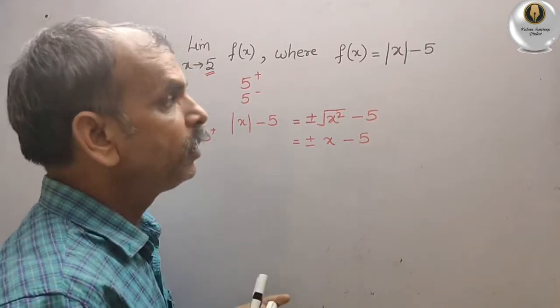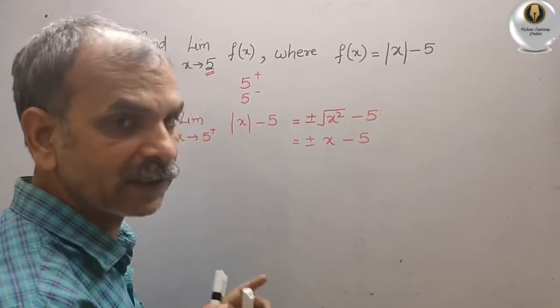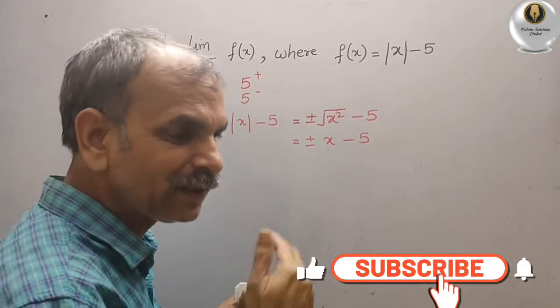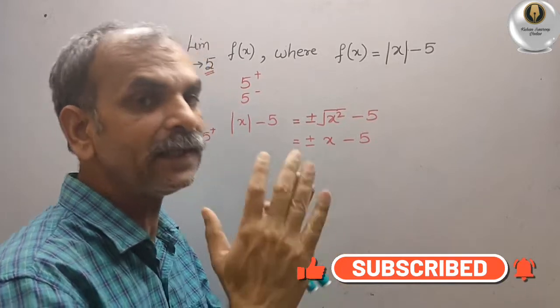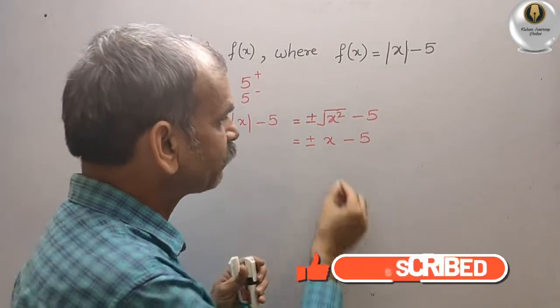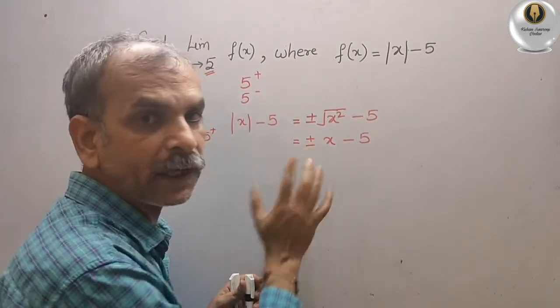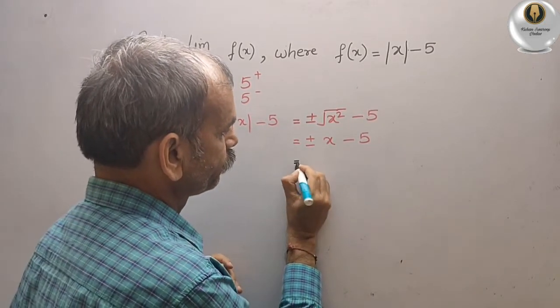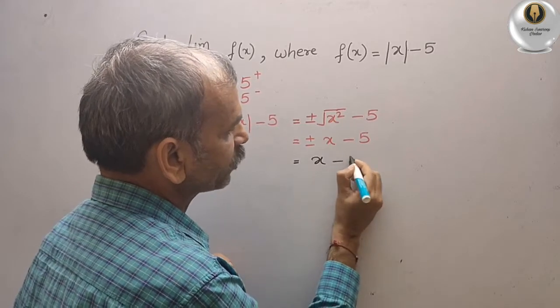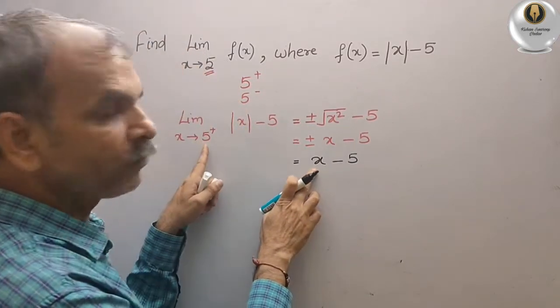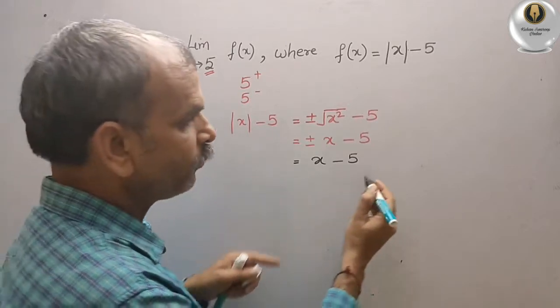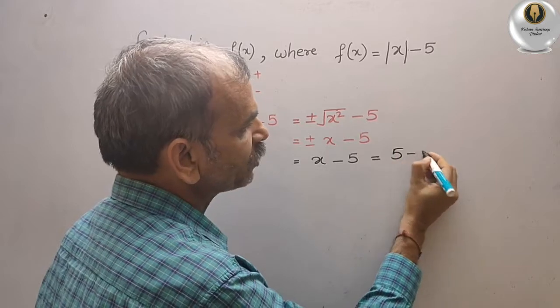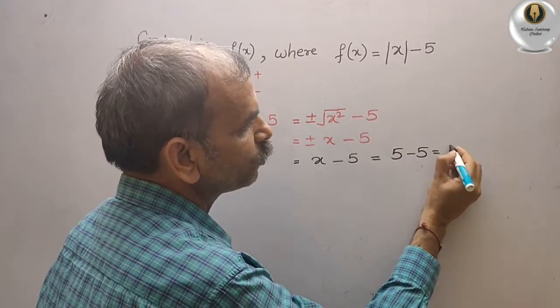Now if you go, understand this, 5 plus, 5 plus means that towards the 6. If we go that, it is a positive. So that means x is positive, not the negative. So we will take the positive side, that is your x minus 5. Now replace this value 5 here. What we will get? We will get what? 5 minus 5, that is equal to 0.